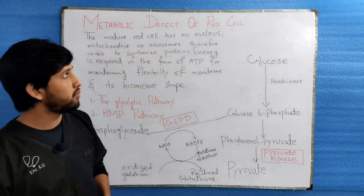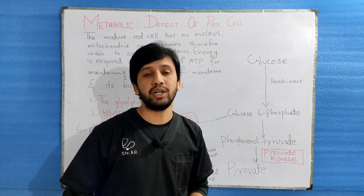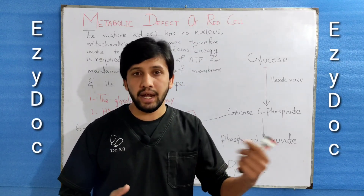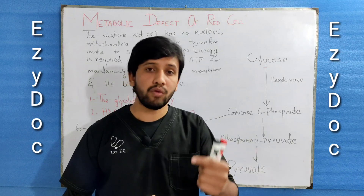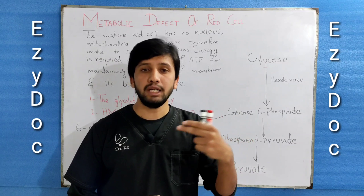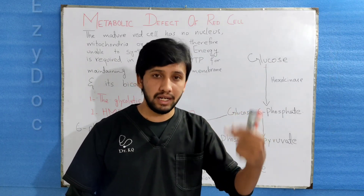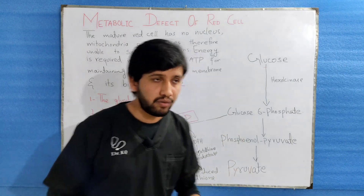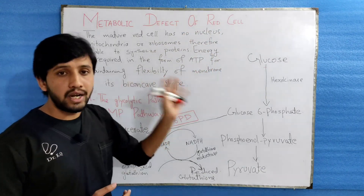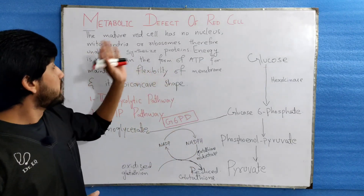Without wasting time, coming to today's topic: there is a metabolic defect of the red blood cell, which is another cause of inherited hemolytic anemia. We have classified anemia into five types. We have discussed inherited hemolytic anemia, the causes of which include: number one, membrane defect — hereditary spherocytosis; number two, hemoglobin abnormality — sickle cell syndrome and alpha and beta thalassemia. Today we are here with the metabolic defect of the red cell membrane leading to inherited hemolytic anemia.